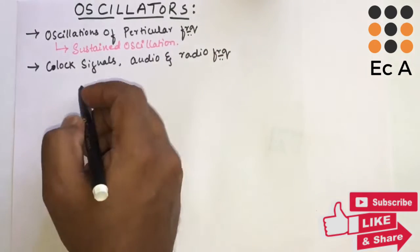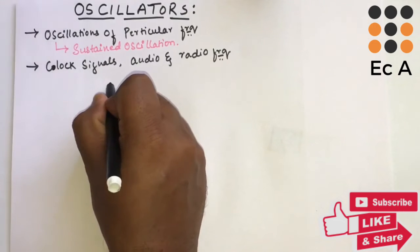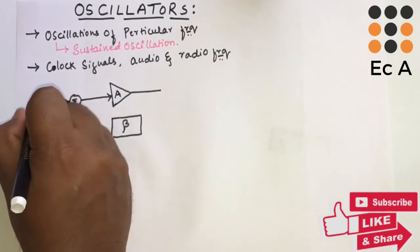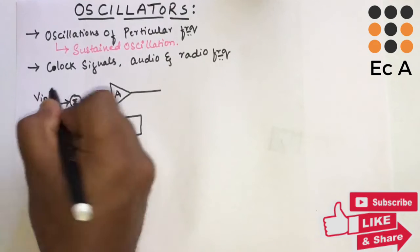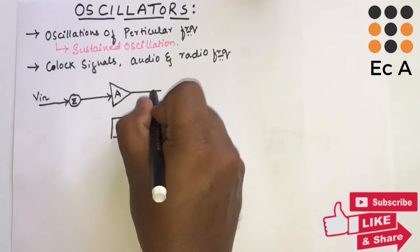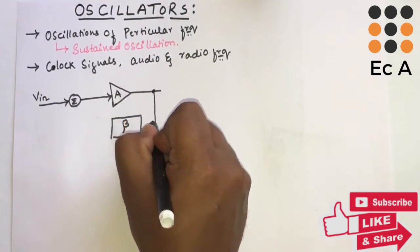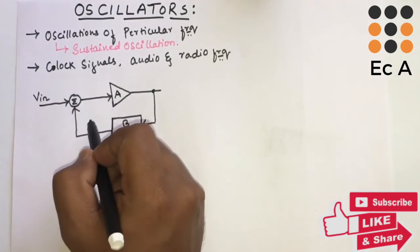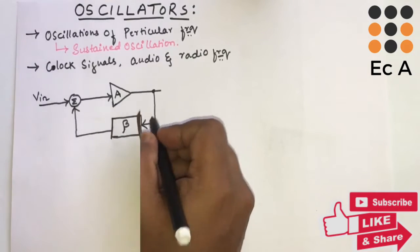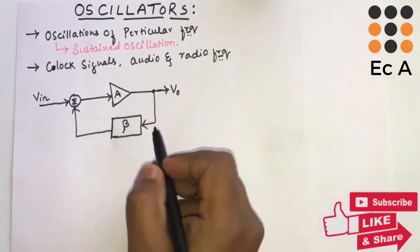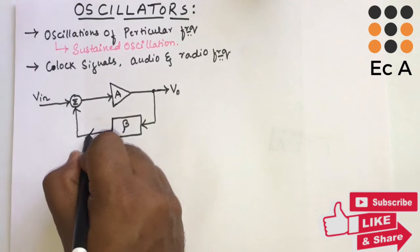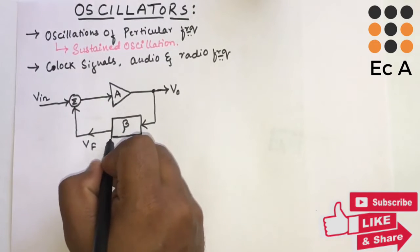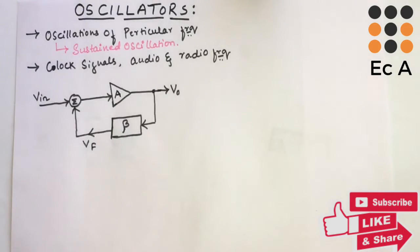Before understanding the oscillator, let us consider an amplifier circuit with feedback. The input to the amplifier is Vin. Some portion of the output signal is fed back to the feedback circuit, and the output of the feedback circuit is given as the input to the amplifier. V0 is the output of the amplifier, and Vf, which is the feedback voltage, is the output of the feedback circuit.